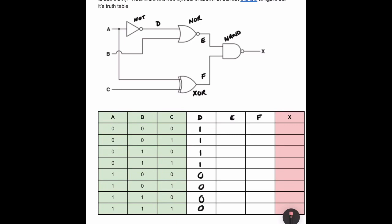E is the output of a NOR gate taking two inputs: D and B. An OR gate would normally produce a one if either input is one or both. But a NOR gate reverses that, so the only combination that produces a one is when both inputs are zero. Looking at columns B and D, only when both are zero does E produce a one.